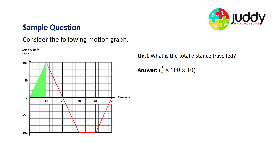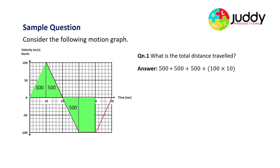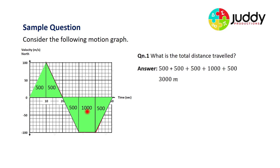The solution: the first section from 0 to 10 seconds has the area of a triangle giving 500 meters. The second section is the same triangle reflected vertically, also 500 meters. Then a third 500 meters below for the section from 20 to 30 seconds. Next, a rectangle with a height of 100 and a base of 10 gives 1,000 meters. Finally, a fourth triangle of 500 meters. In total: 500 + 500 = 1,000, +500 = 1,500, +500 = 2,000, +1,000 = 3,000 meters total distance traveled.